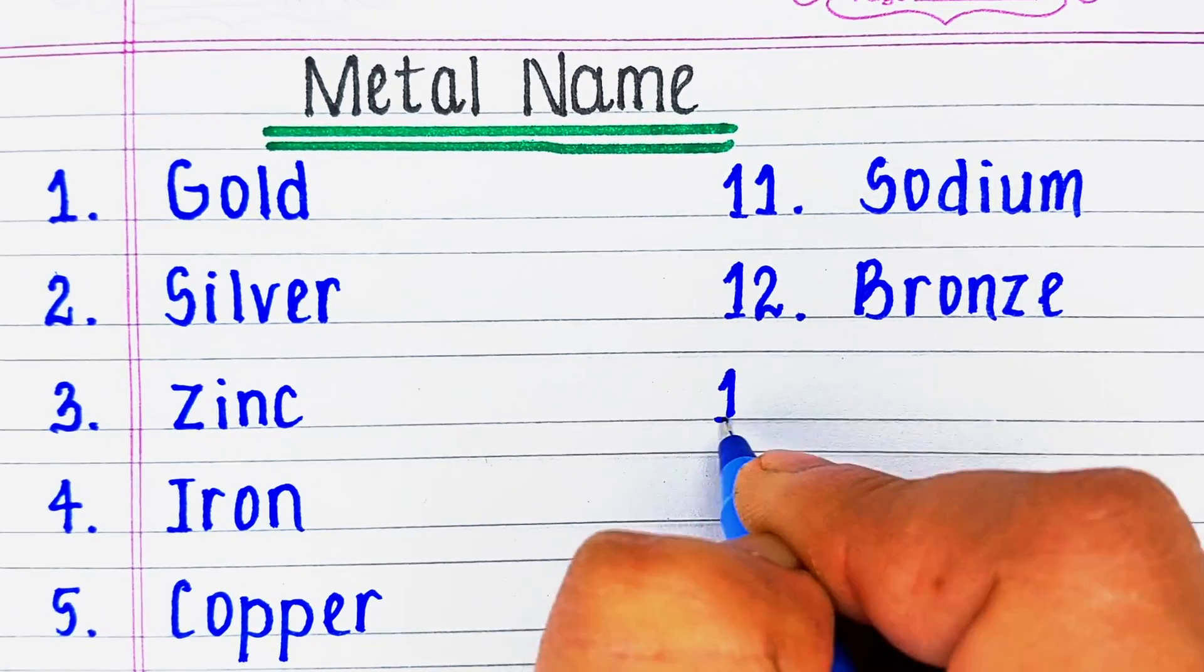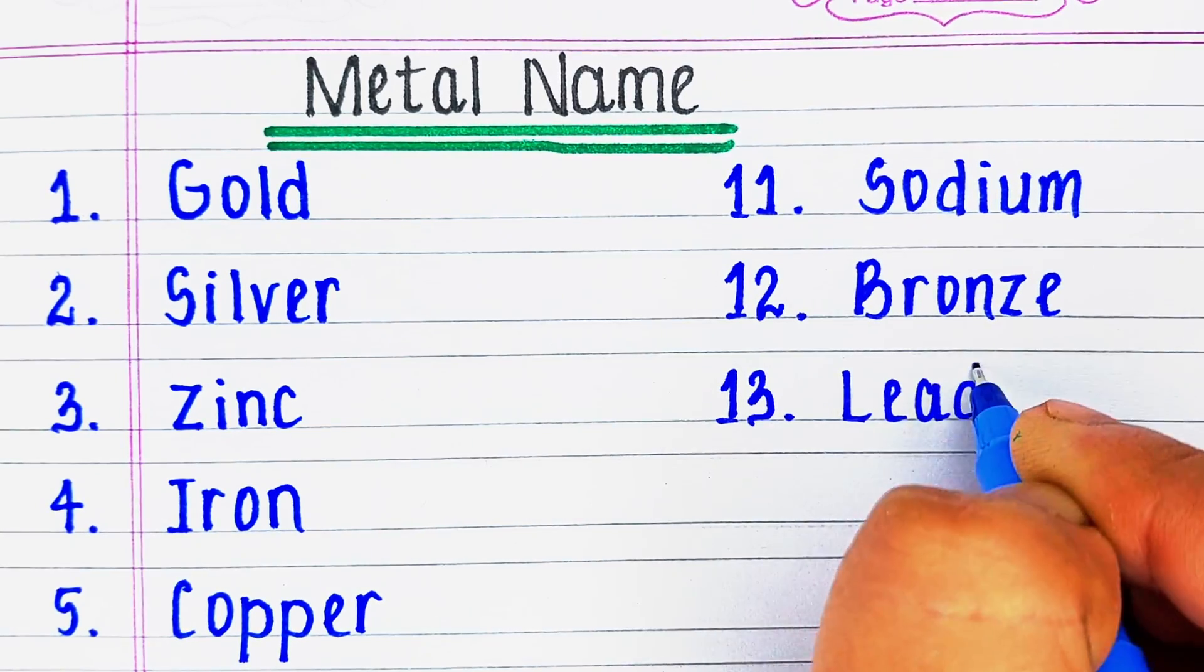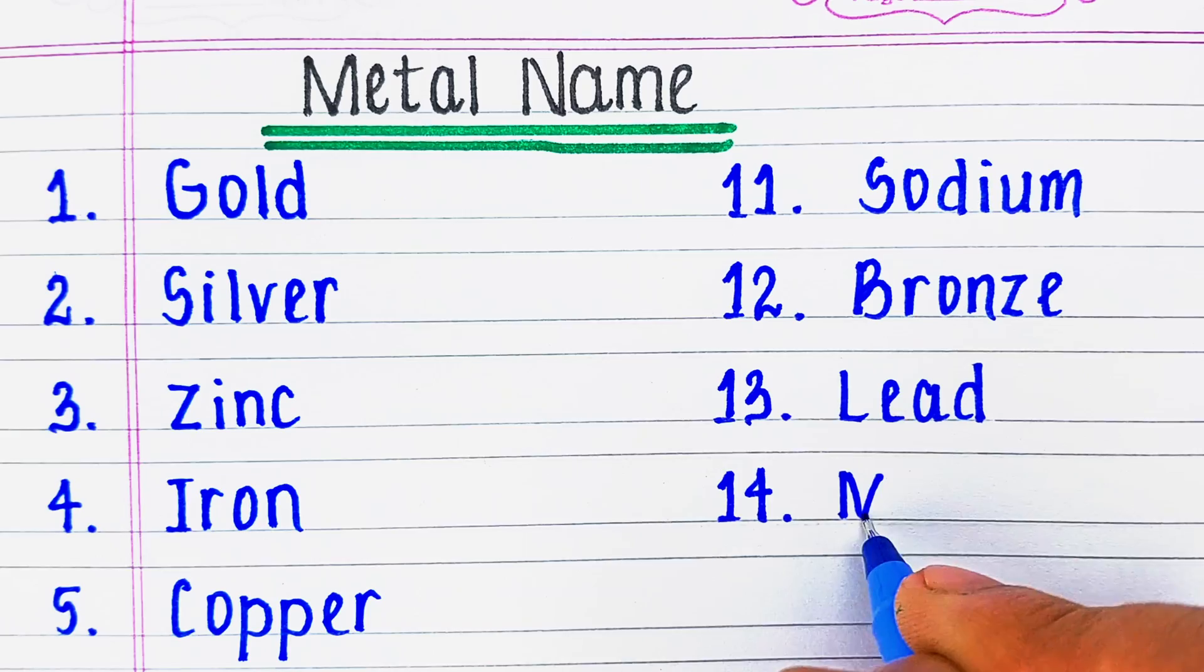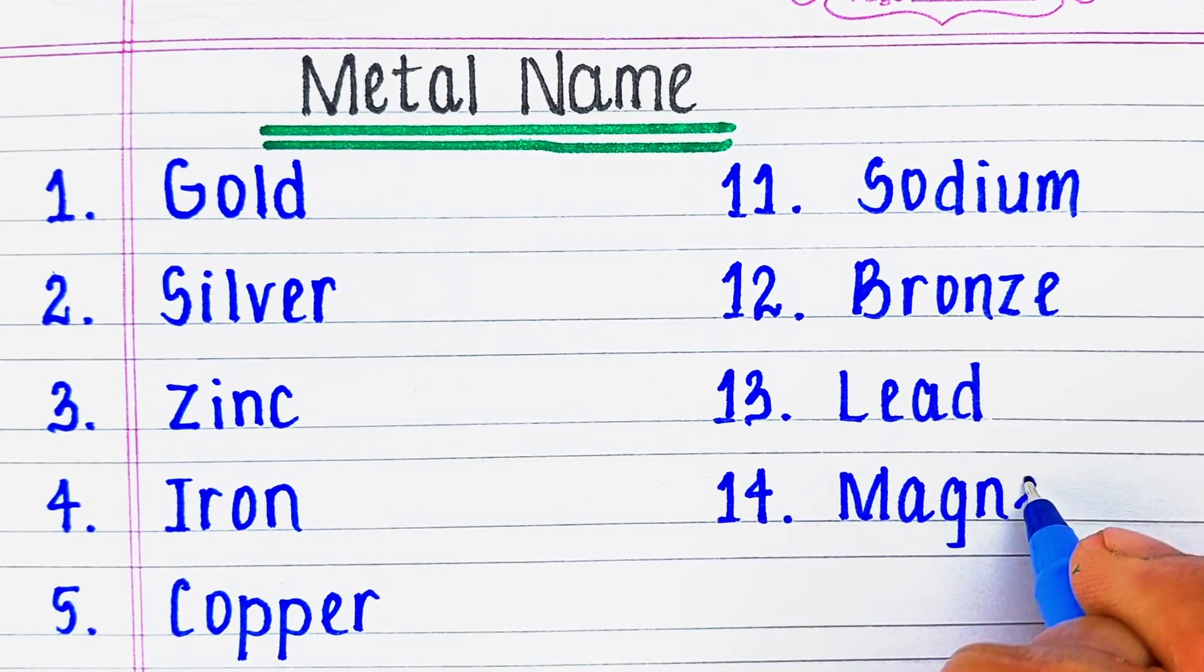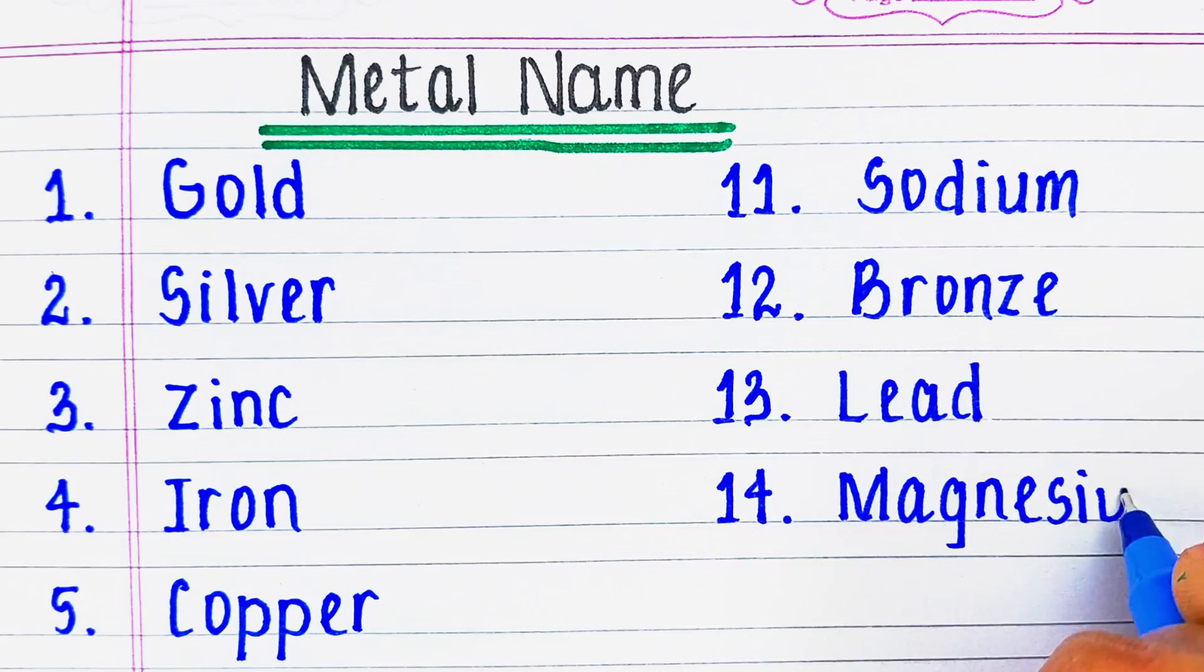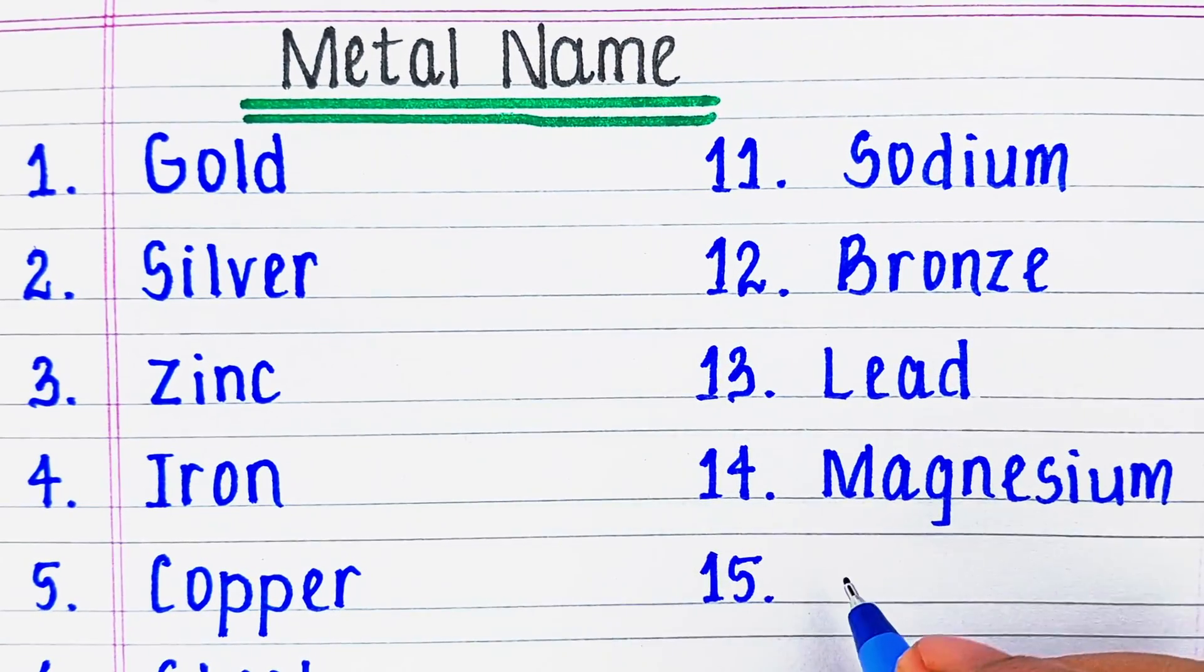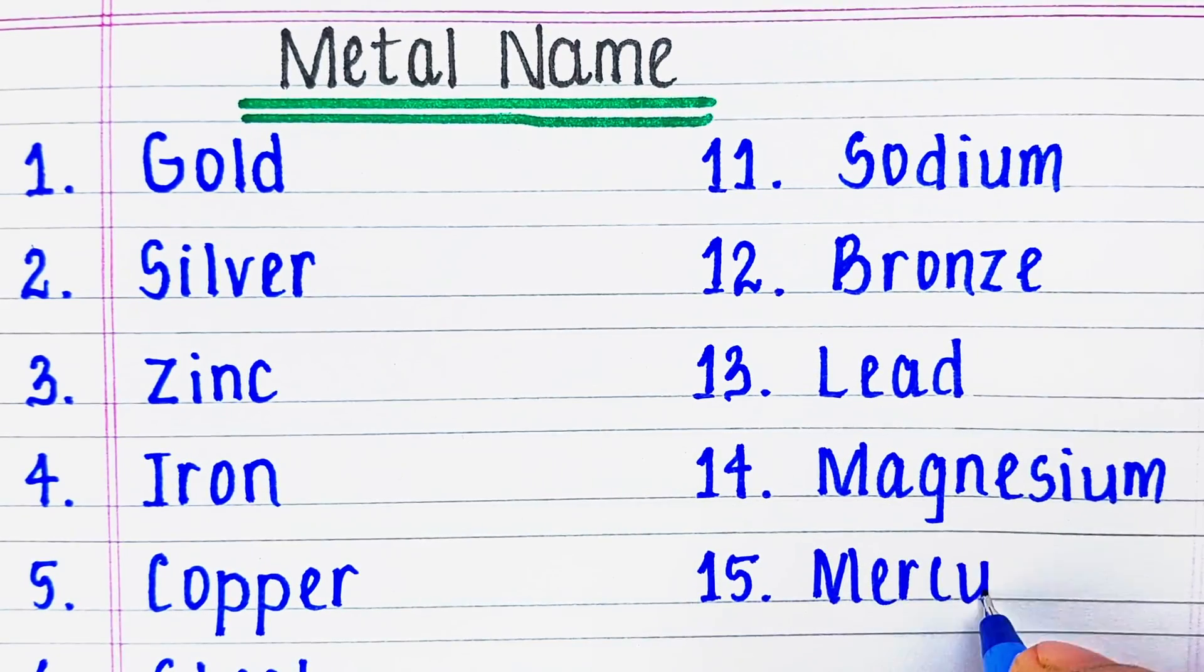Next is L-E-A-D, lead. Next metal in our list is M-A-G-N-E-S-I-U-M, magnesium. Next is M-E-R-C-U-R-Y, mercury.